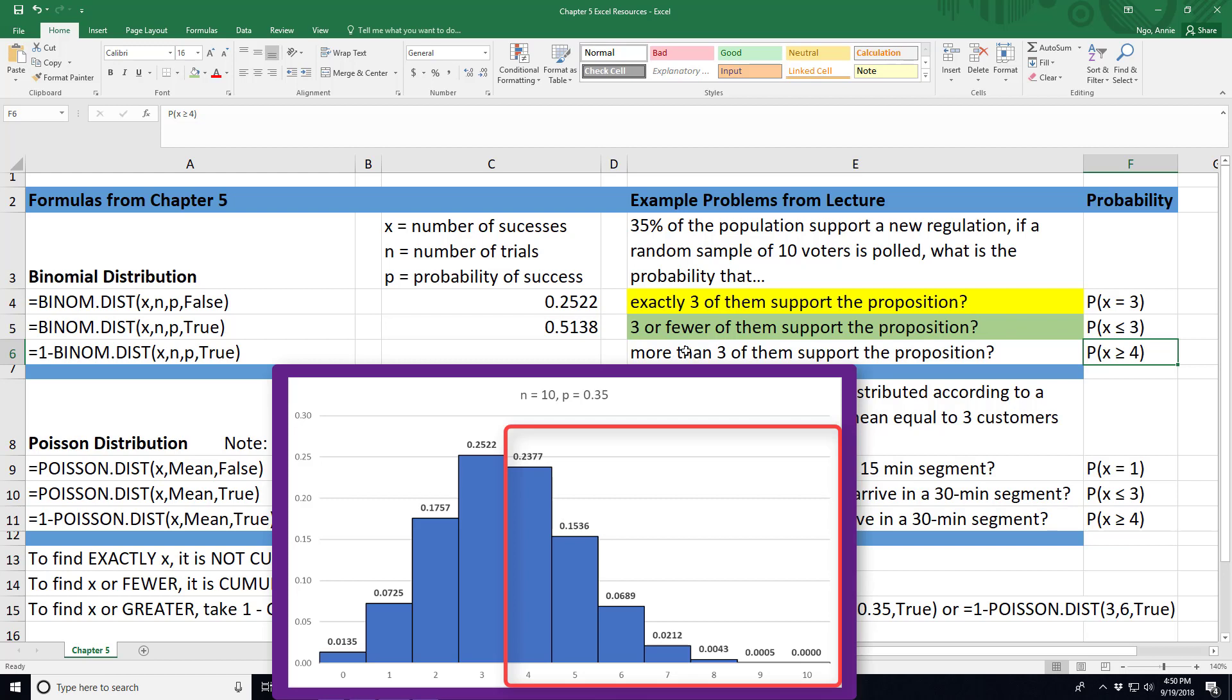So you want to be careful on how you set up your probability statements because it will affect your formula. So since I'm interested in 4 or more and I know that in Excel it's cumulative, it reads left to right.